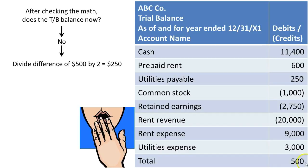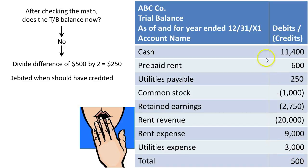One thing we can do is take this difference and divide it by 2, which gives us $250. It may be that we debited when we should have credited, and that caused this extra $500 of debits. By scanning down, are there any accounts that normally should be credits but appear as debits?